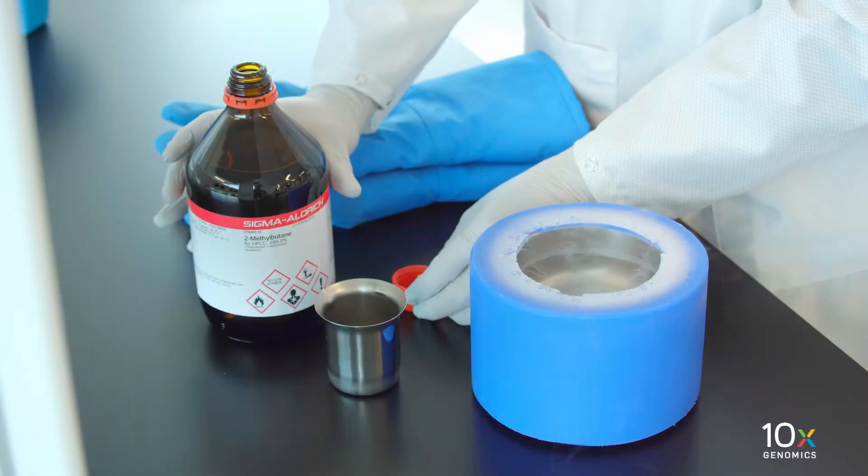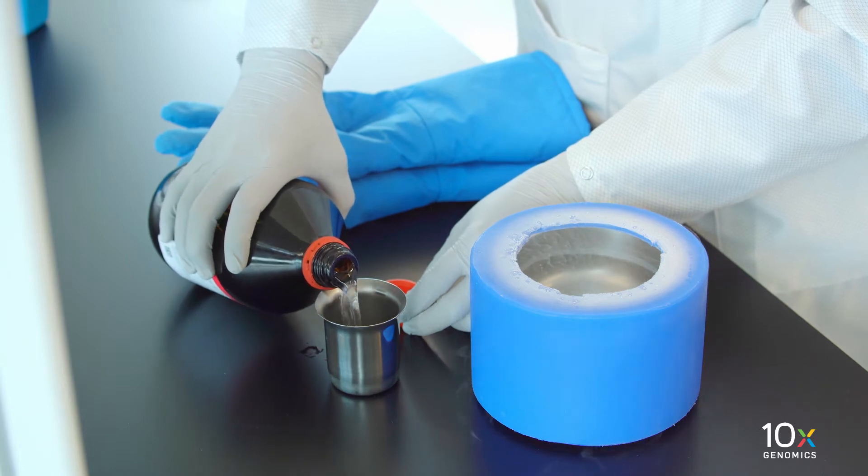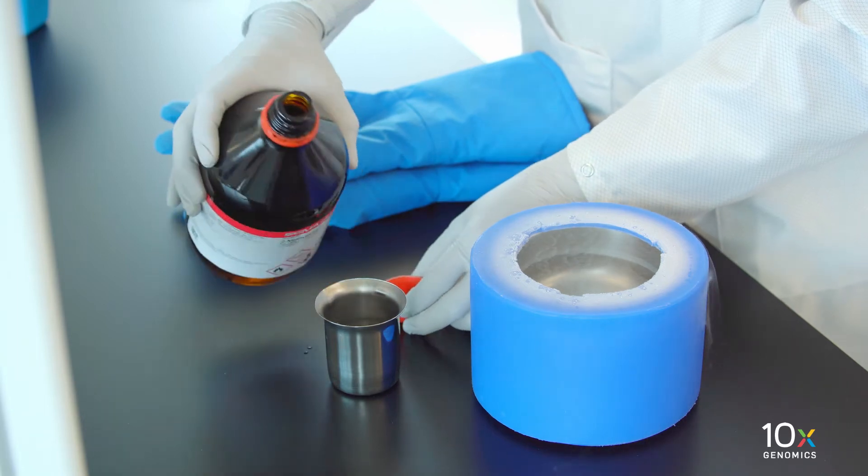First, we will prepare the isopentane and liquid nitrogen bath. Fill two-thirds of a metal beaker with isopentane. Make sure you add enough isopentane to fully submerge the tissue.